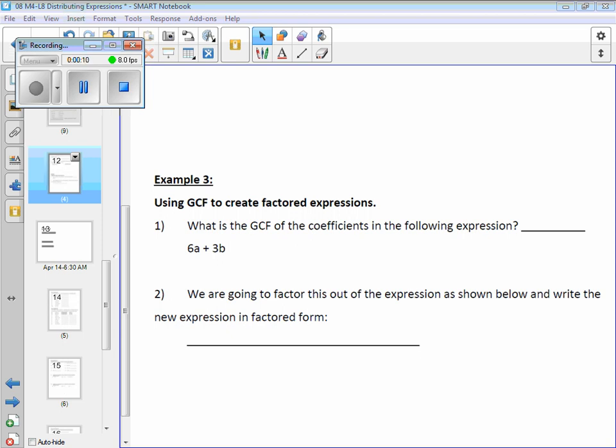So what is the greatest, we're going to take a look at each term. We have 6A and 3B. What's the greatest, and one more thing, our letters are different. We're actually going to focus in on the coefficient. What's the greatest number that goes into 6 and 3? 3. That's the GCF of 6 and 3.